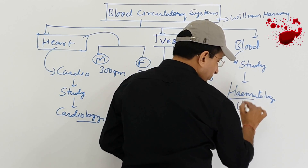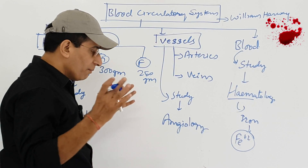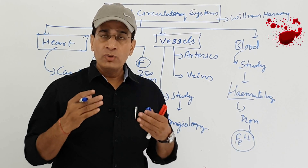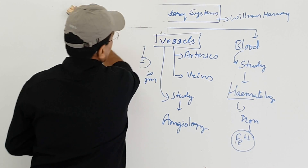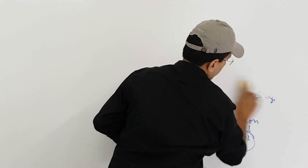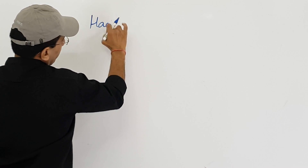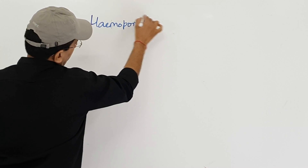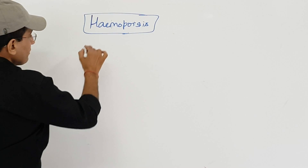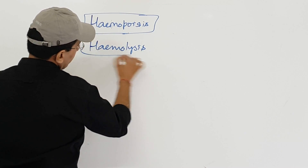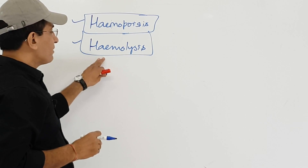The process by which blood is generated in the body is known as hemopoiesis. The process by which blood is destroyed in the body — especially RBCs — is known as hemolysis. So hemopoiesis is blood generation and hemolysis is blood destruction, in which RBCs of the blood are destroyed.